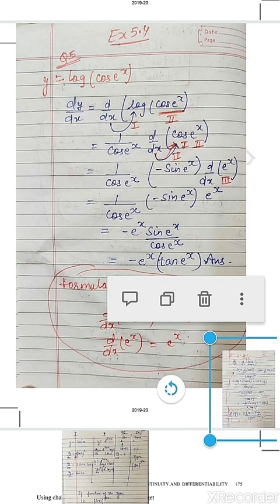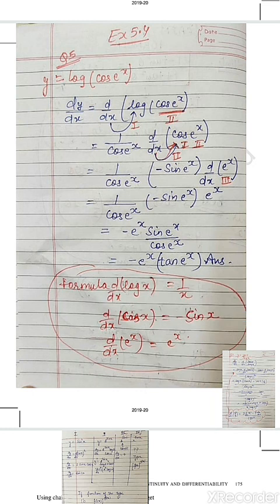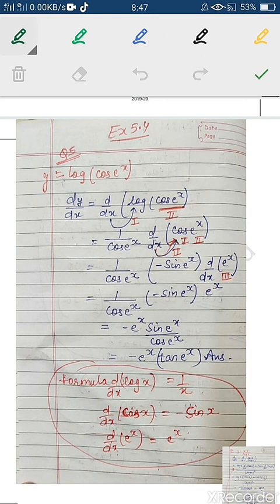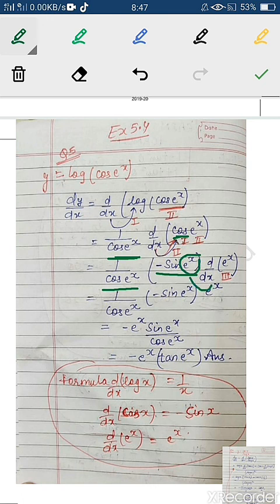Question 5 of Exercise 5.4: y = log(cos(e^x)). Apply derivative of log: 1/cos(e^x). Then derivative of cos: cos becomes −sin, giving −sin(e^x). Then derivative of e^x is e^x. Combining: −sin(e^x) · e^x / cos(e^x) = −e^x · tan(e^x). So the answer is −e^x · tan(e^x).